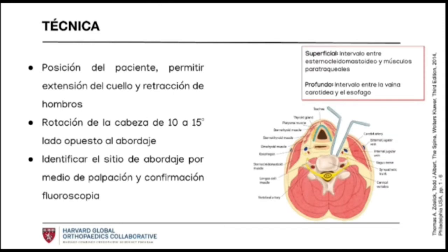The anterior cervical approach technique includes having the patient in a supine position with the neck extended, with the shoulders extended and the head rotated 10 to 15 degrees to the left or right, depending on the surgeon's preference. Some surgeons prefer the left side due to the location of the recurrent laryngeal nerve on the right side. Identify the site of the approach through palpation of the trachea and palpation of the thyroid and cricoid cartilage.